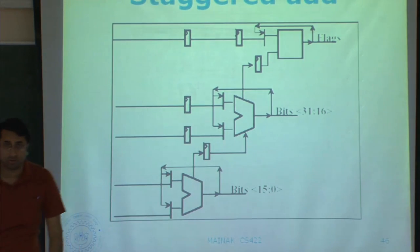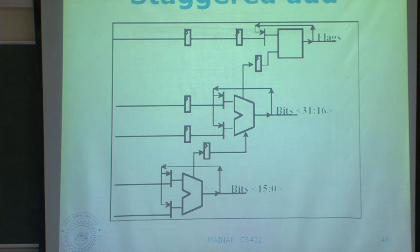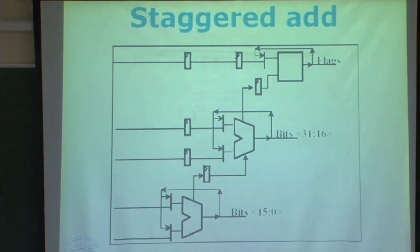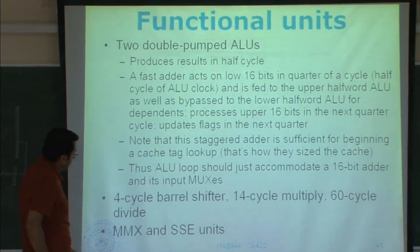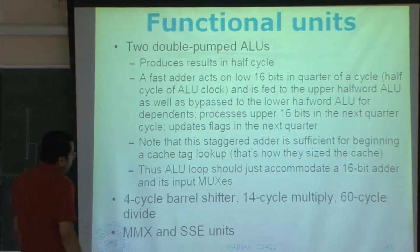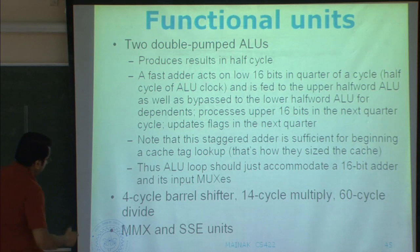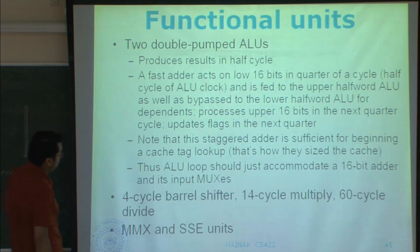The barrel shifter is a 4-cycle unit, there is a 14-cycle multiplier, and there is a 60-cycle divider, along with other functional limits.